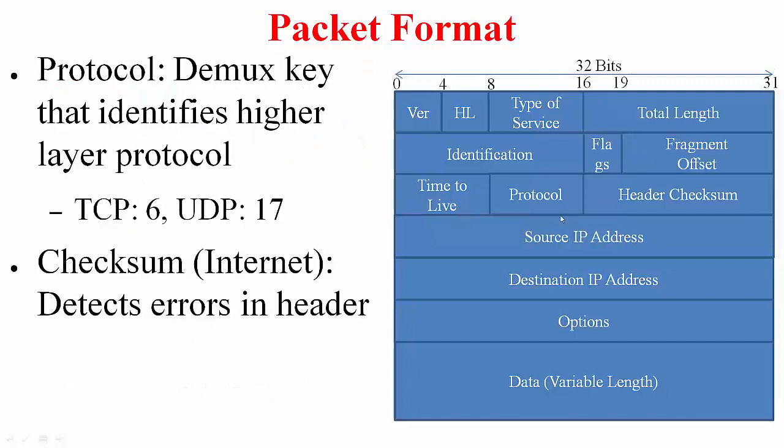Next is the protocol field which you must be familiar with from before. This is the demultiplexing key that identifies the higher layer protocol. If you want this payload, the data, to pass to TCP you set this value equal to 6. If you want to pass it to UDP you set it equal to 17.